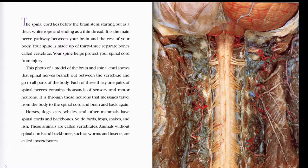Horses, dogs, cats, whales, and other mammals have spinal cords and backbones. So do birds, frogs, snakes, and fish. These animals are called vertebrates. Animals without spinal cords and backbones, such as worms and insects, are called invertebrates.